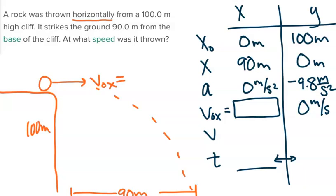So we are looking to solve for our initial x velocity. We can look at the entire x column and realize we are going to need time in order to solve for this. So just like most problems, we're going to need to solve for time in the other direction.